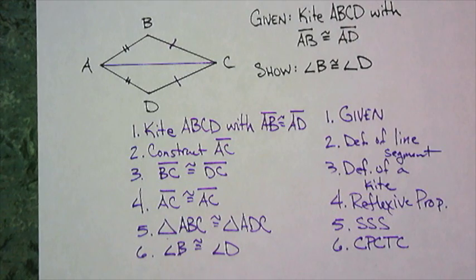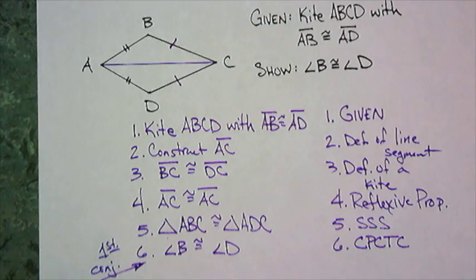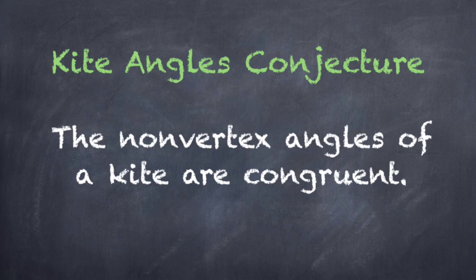Now, I also get a little bit of bonus material for this. Here's our conjecture, first conjecture for the day. What did we just prove? We'll call it a kite angles conjecture. The non-vertex angles of a kite are congruent. Isn't that what we just proved? Yes. In fact, that is what we just proved.